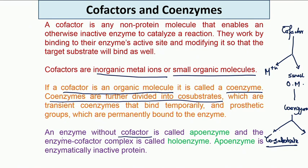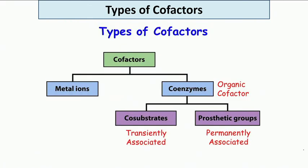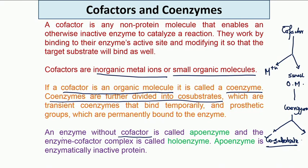When the coenzyme is transiently bound it is called a co-substrate, and when it is permanently bound to the enzyme those are called prosthetic groups. So one is co-substrate and the other is prosthetic group.